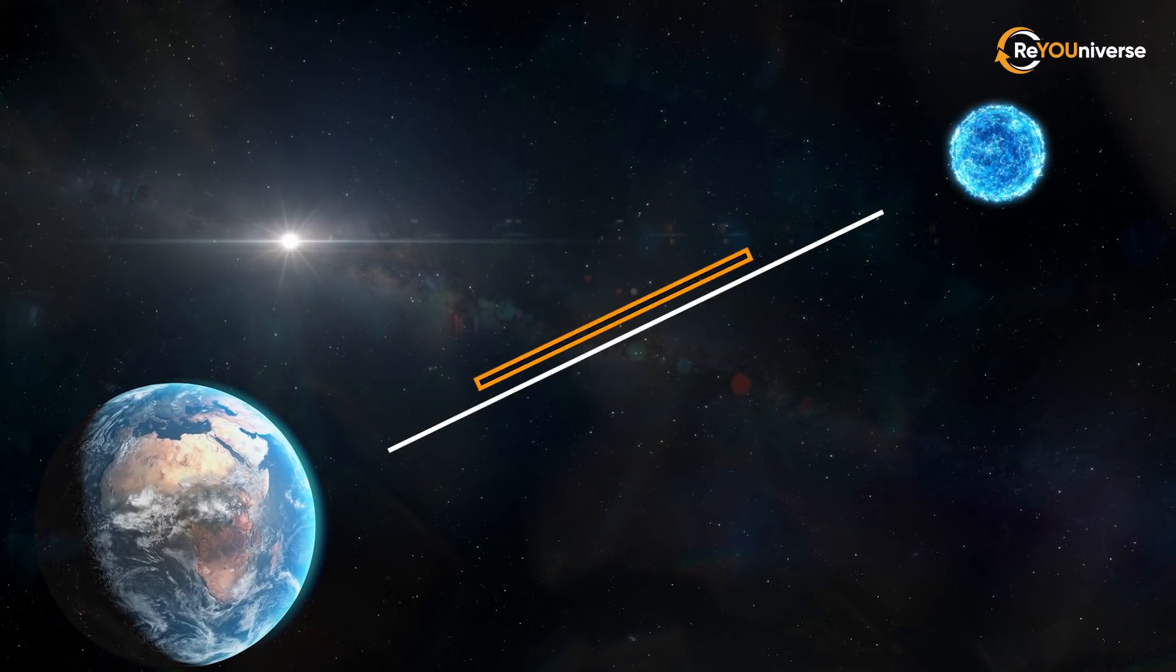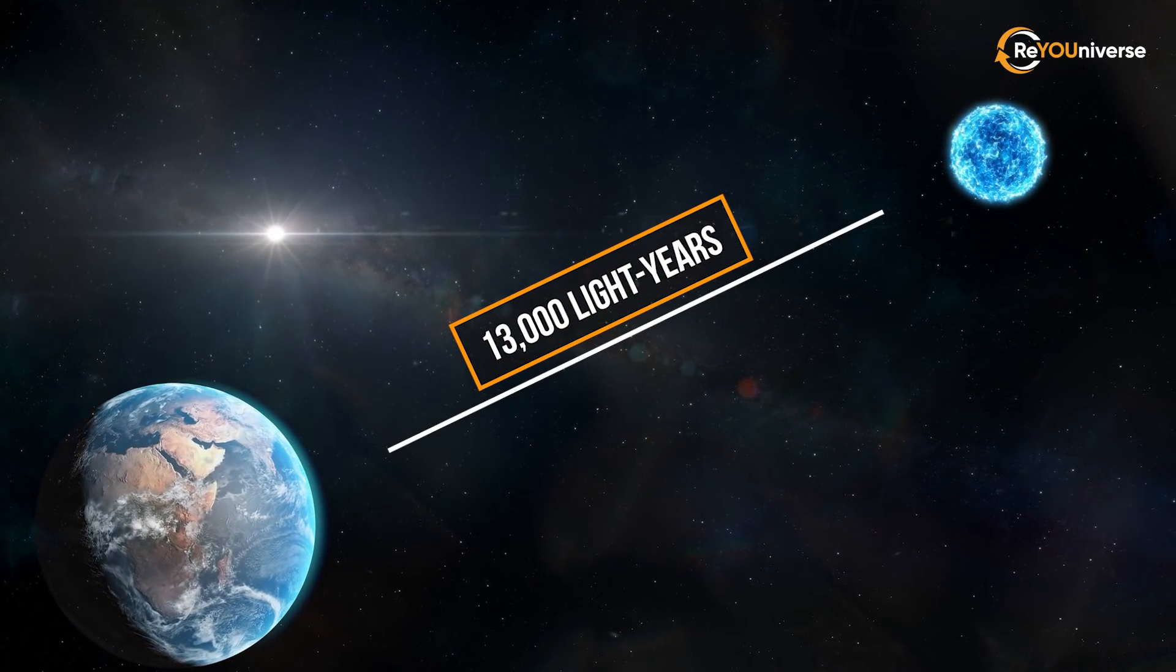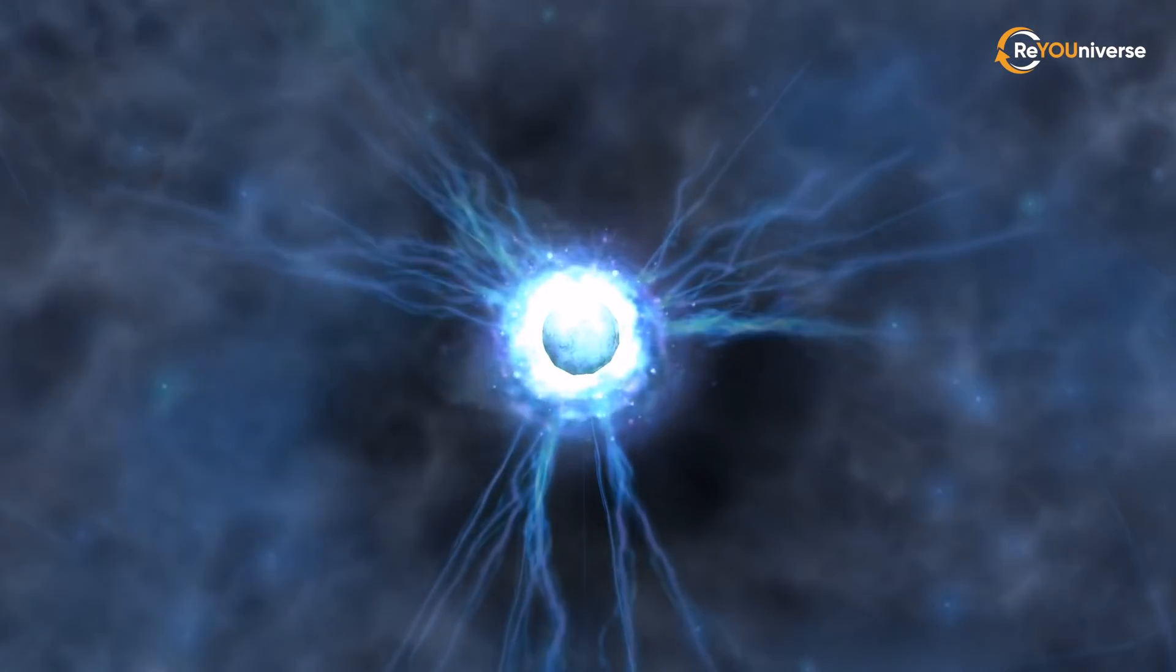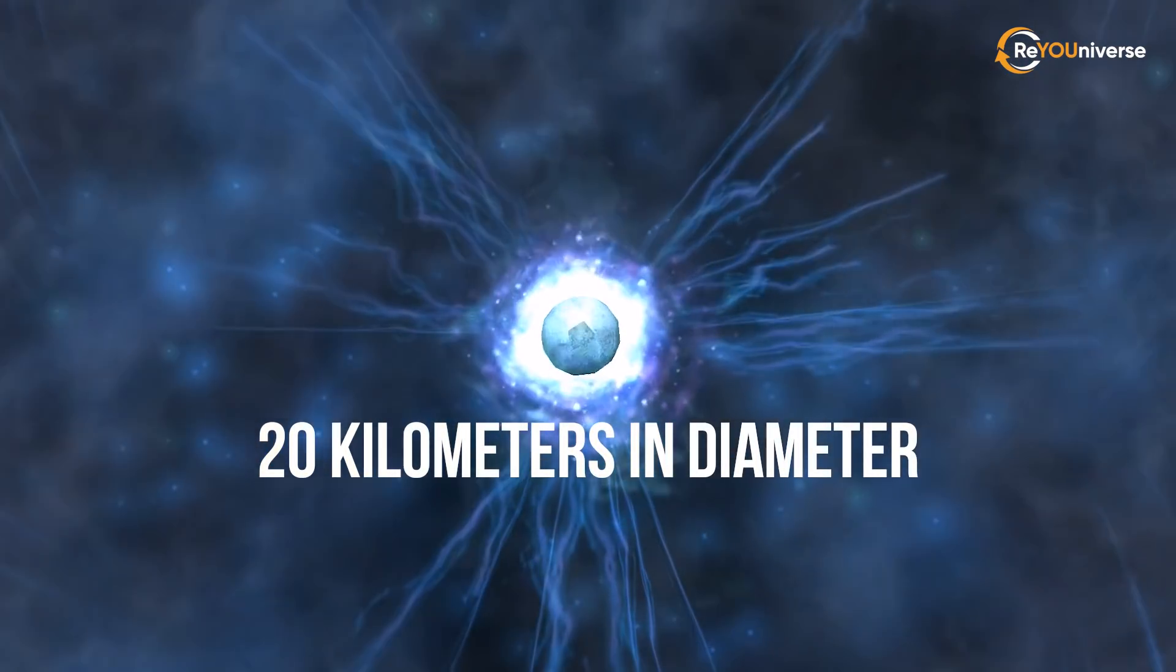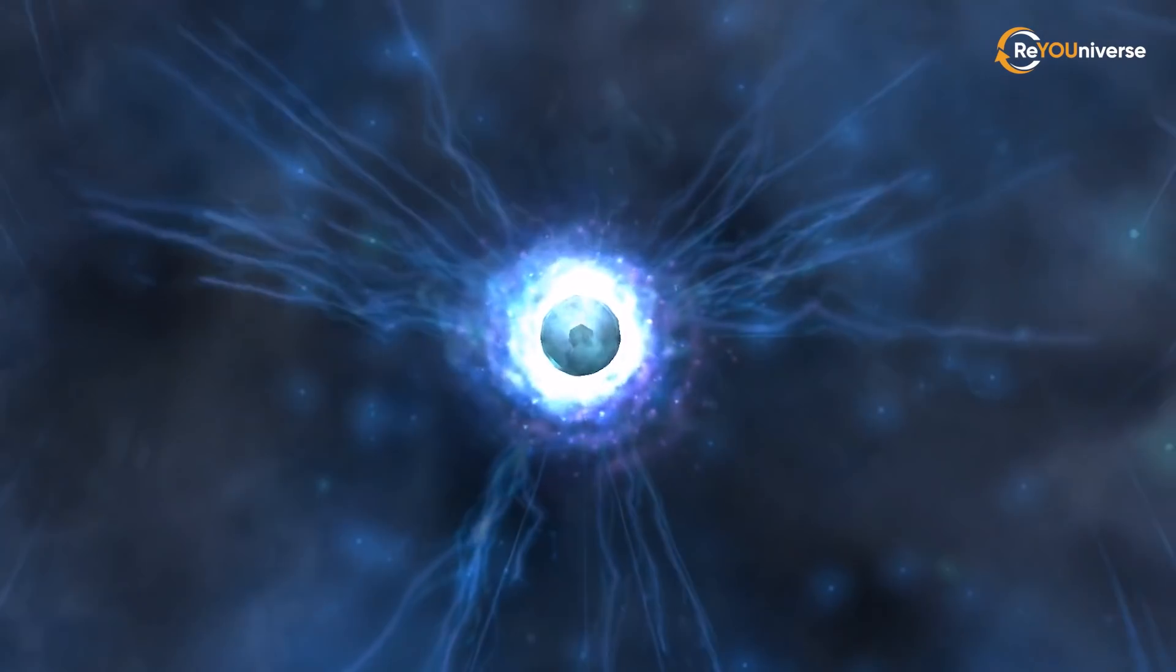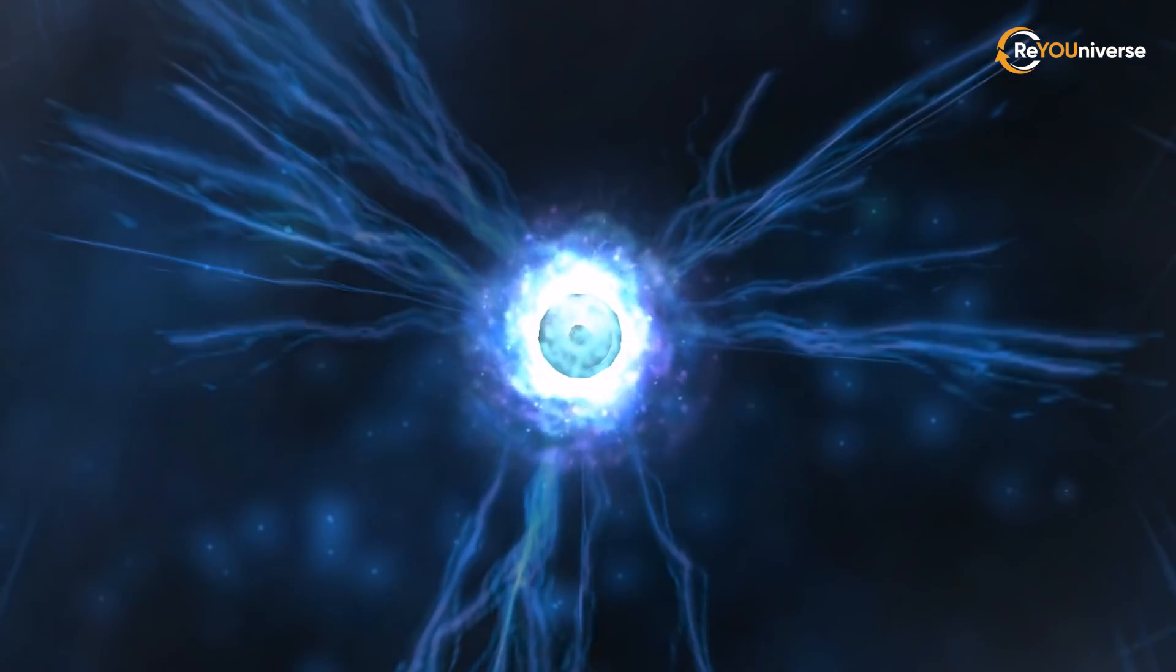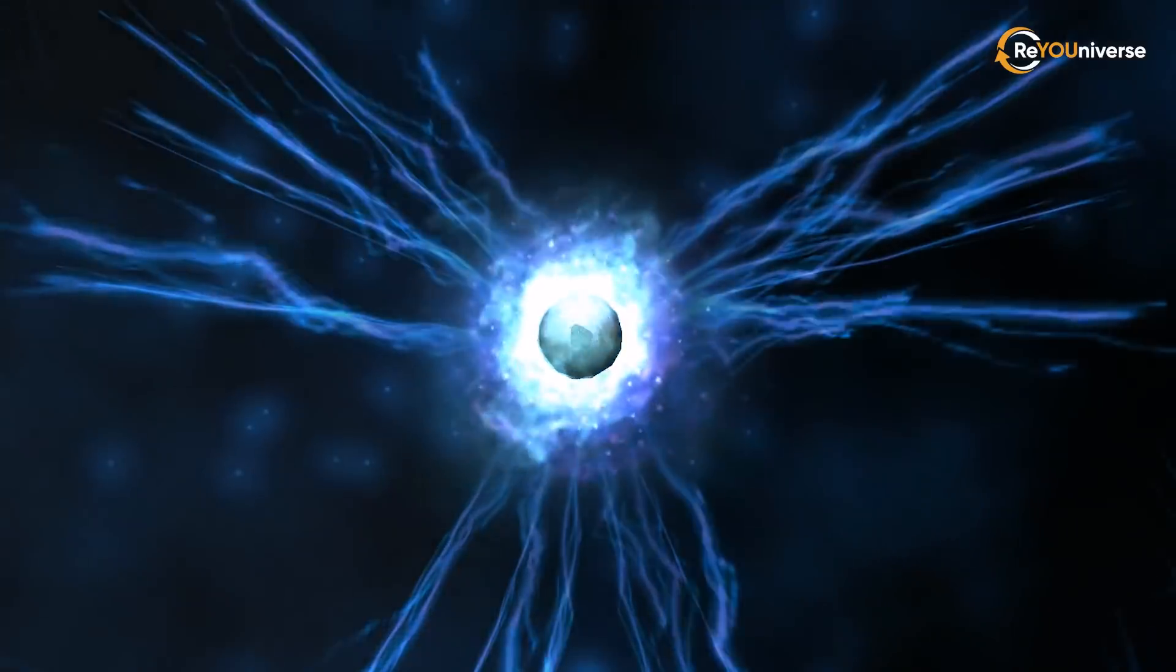It lies 13,000 light-years away from Earth in the Cassiopeia constellation. It's no more than 20 kilometers in diameter, and revolves around its axis every 6.98 seconds, which is very slow by neutron star standards.